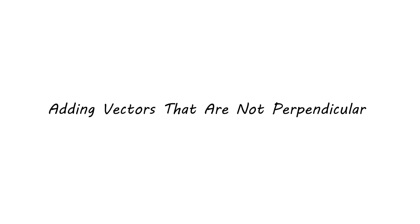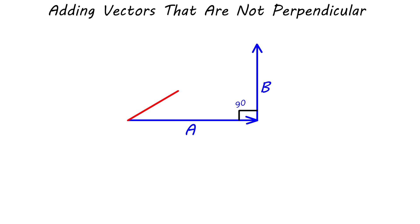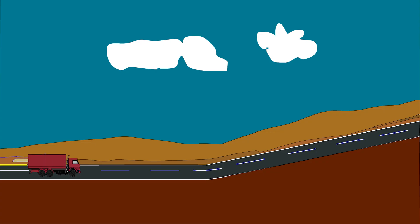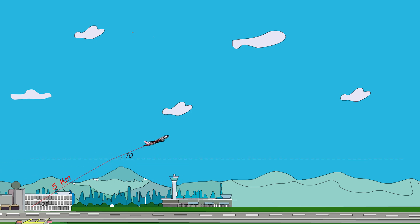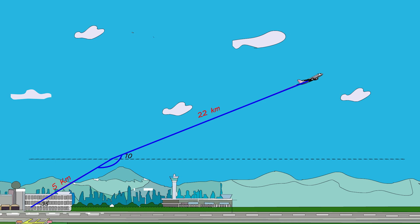When adding vectors that are not perpendicular, many objects move in one direction and then turn at an angle. For example, a plane travels 5 kilometers at 35 degrees, then climbs at 10 degrees for 22 kilometers. Because the original vectors don't form a right angle, we cannot directly apply the tangent function or the Pythagorean theorem.